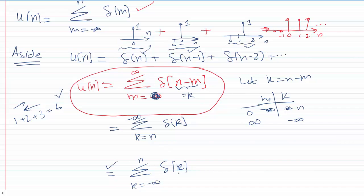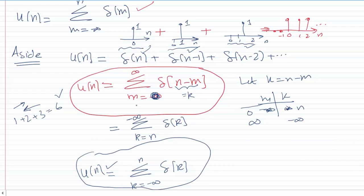On the left side we have u of n, so that's the expression we were supposed to prove. Don't worry about the variable k or m here, because the variable over which we sum is a dummy variable — we can call it anything we like. So that statement is proven. If you have any questions regarding the discrete time impulse function or discrete time unit step function, just leave them in the comment section and I'll get back to you. Thank you for listening.